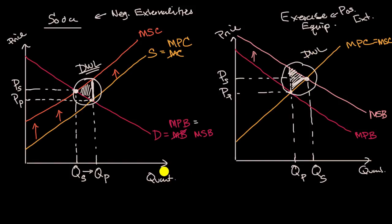The big takeaway here is that when you factor in negative externalities or positive externalities, you might discover deadweight loss to society. An interesting question to think about is how could society rectify that — there are ways to start to at least approach it.